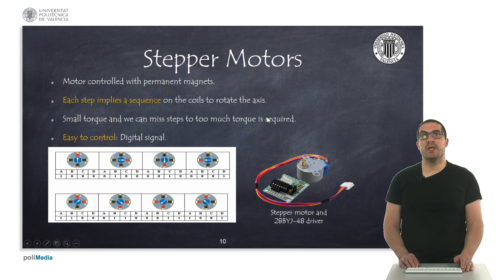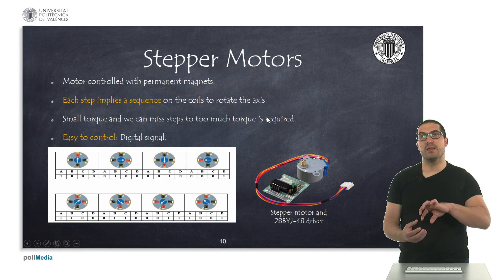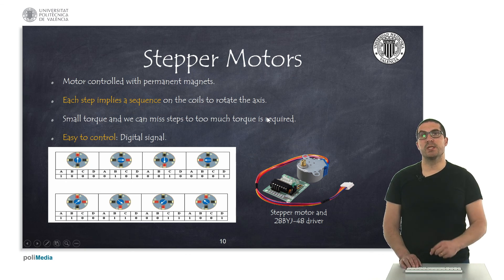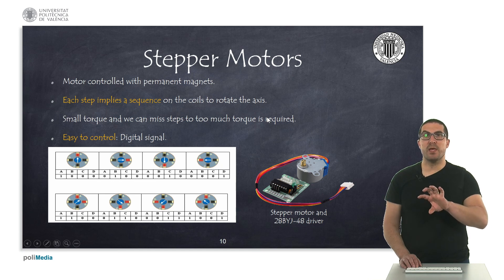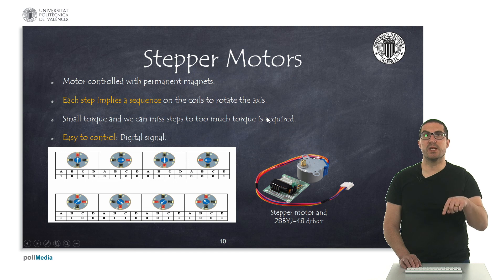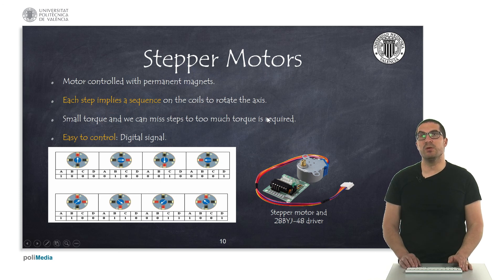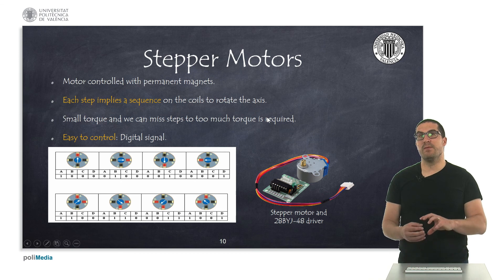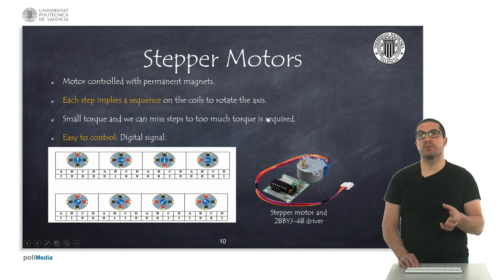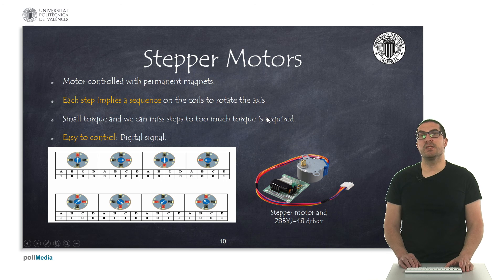Then we have the stepper motors — they are motors controlled with magnets. The axis can be controlled by activating and deactivating a sequence of magnets, and what we do with this kind of motor is to generate steps. Each step is one single rotation increment of the motor, and we count how many steps we want to generate; this produces a square signal and the motor responds accordingly. One of the main drawbacks is that they have small torque and work in open loop, meaning that if we require too much torque we might miss a step — we think we've moved to a specific position but this is not the case. This typically happens on 3D printers when they get stalled. The main advantage is that they can be easily controlled with digital signals.